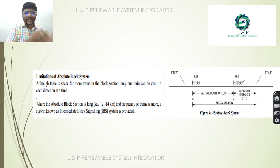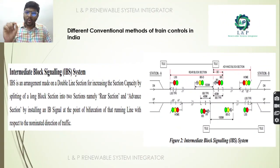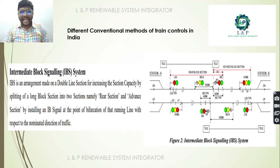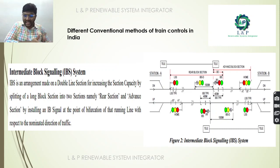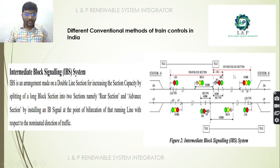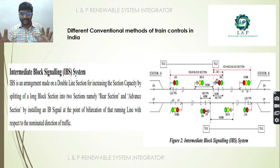To overcome this limitation, a new system came into existence: the Intermediate Block System. It is an arrangement made for double line sections to increase section capacity. It has two sections — the rear section and the advanced section — allocated with signals accordingly.